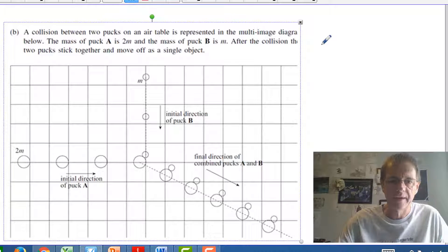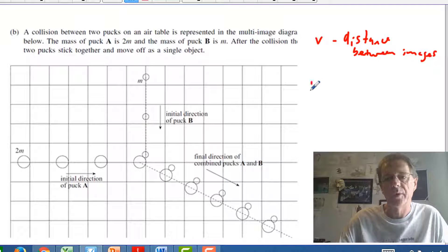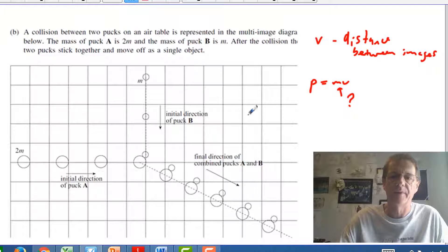Points to consider here: when you do the velocity, the velocity is obviously related to the distance between the images because obviously the further it travels the higher the velocity. You've got to consider something else as well though. For momentum then you need to take into account the mass somehow. How is the mass going to be indicated here?